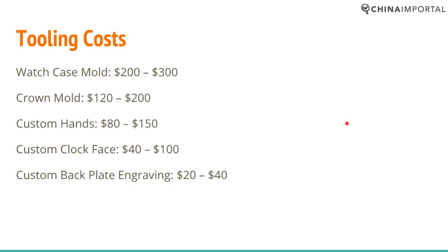When you engage in OEM prototyping — getting a prototype made to your specification — you will need to pay for a watch case mold. That's a bare minimum of $200–$300. You also have the crown mold at $120–$200, custom hands at $80–$150, the clock face at $40–$100, and custom backplate engraving at $20–$40. The more you customize, the more you pay. These are fixed, one-time costs — but you still have to consider how far to go with customization.